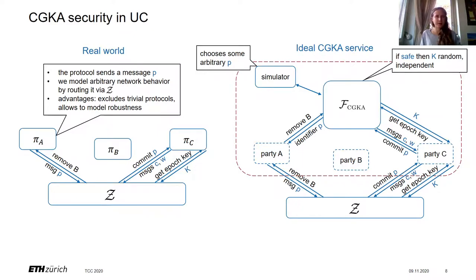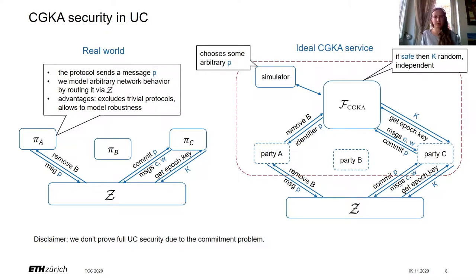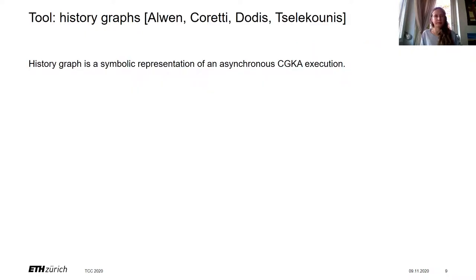What remains is to define this ideal functionality F_CGKA. We do not prove full UC security because of the commitment problem — we restrict the environment from performing certain corruptions. To define F, we first introduce the tool of history graphs, introduced by Alvin, Coretti, Dodis, and Selekunis. A history graph is a symbolic representation of a CGKA execution in the asynchronous setting.